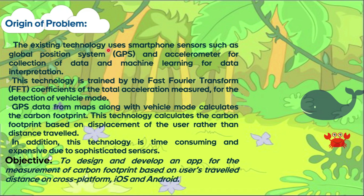The GPS data from maps along with the vehicle mode calculates the carbon footprint based on displacement. It takes a starting position and an ending position — for example, from my house to CMR Central — and draws a straight line between both dots to calculate the distance. But usually no place is in a straight line; we take left turns, right turns, increase speed, etc. So it doesn't give the actual distance travelled, and therefore doesn't give an accurate carbon footprint. In addition, this technology is time-consuming and expensive due to its sophisticated sensors and inbuilt machine learning.